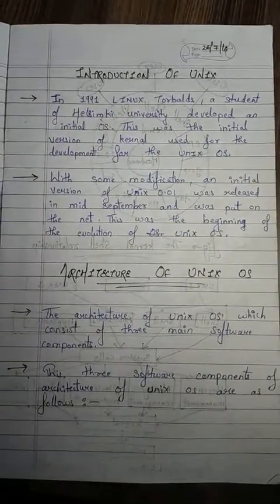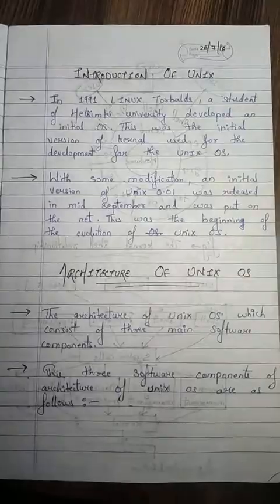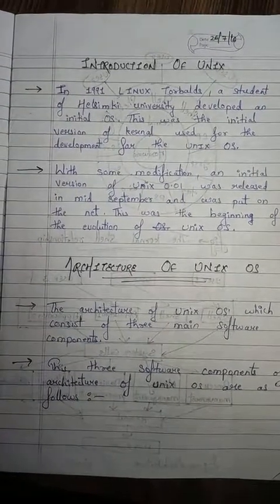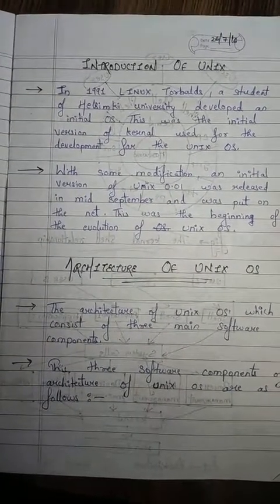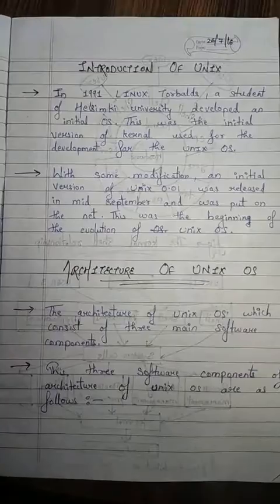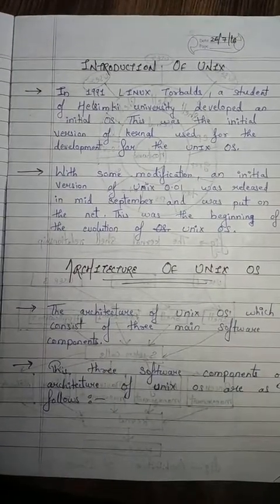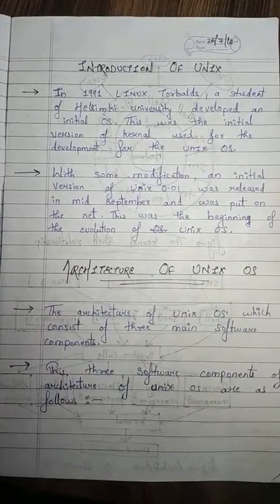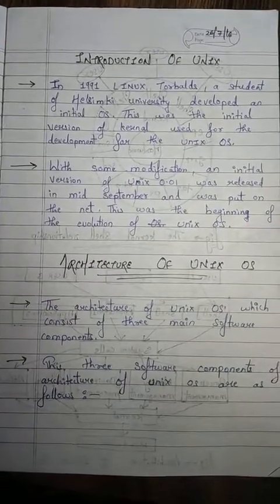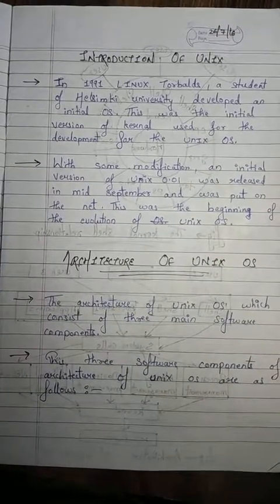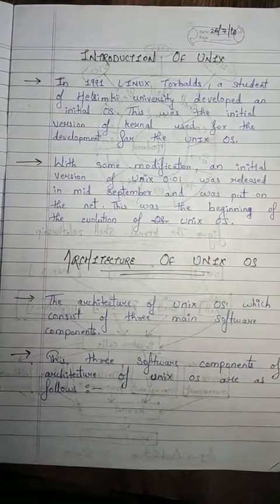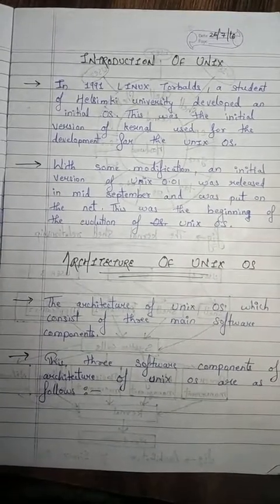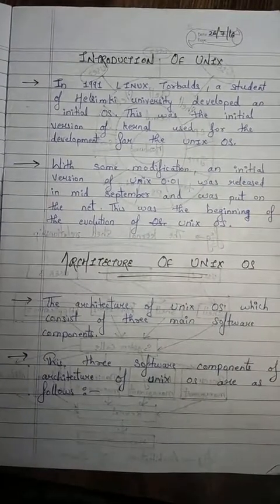Introduction of Unix: In 1991, Linus Torvalds, a student of Helsinki University, developed an initial operating system. This was the initial version of the kernel, used for the development of the Unix OS.